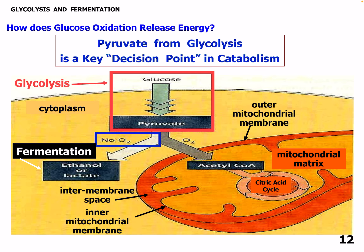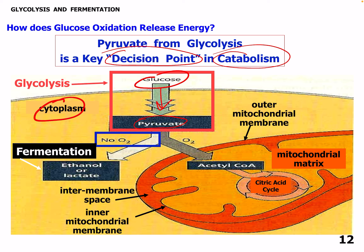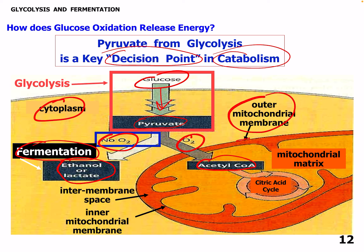Pyruvate from glycolysis is the key decision point in catabolism. Here we have our glucose going through glycolysis in the cytoplasm — now we have that pyruvate. We can go through anaerobic or aerobic. If there's no oxygen, we can have fermentation, turning pyruvate into ethanol or lactate. If we have O2, we change pyruvate into acetyl-CoA. This acetyl-CoA will enter the citric acid cycle, and then we'll deal with the electron transport chain. We can get up to 32 ATP using cellular respiration, which involves O2.